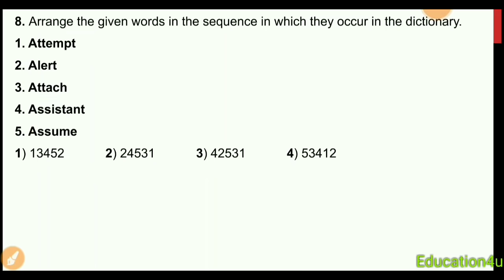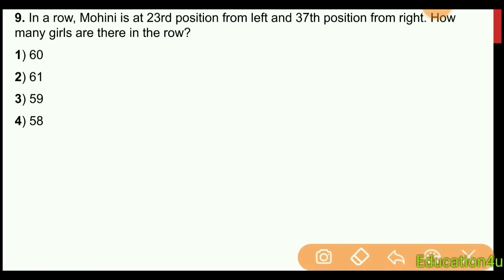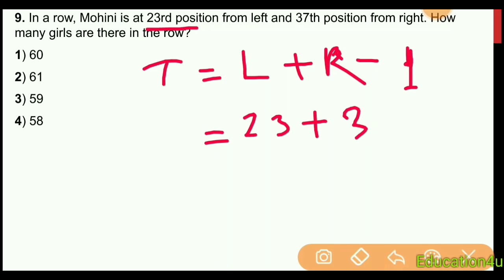Mohini is 23rd from the left and 37th from the right. How many total students are there? Use the formula: left plus right minus one. So 23 plus 37 minus 1 equals 59 students.